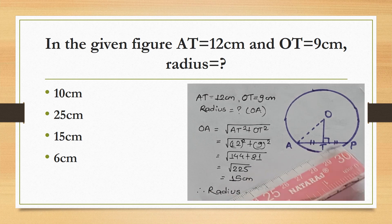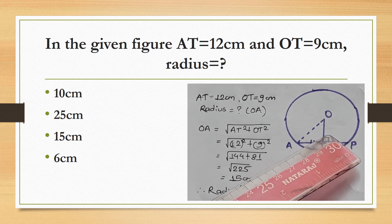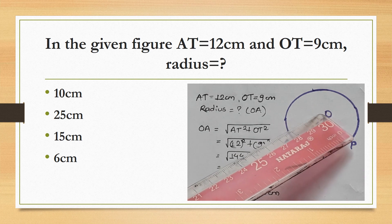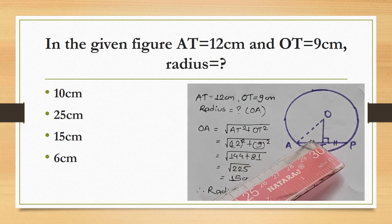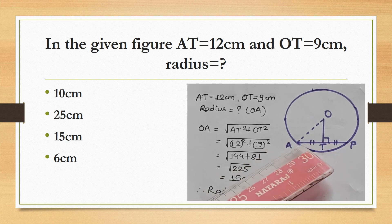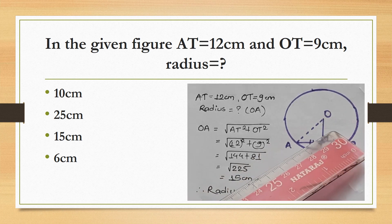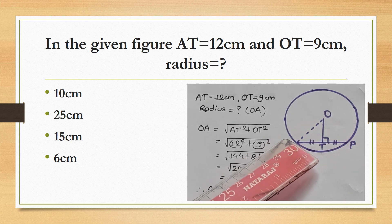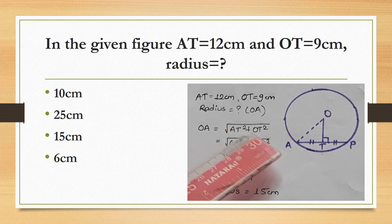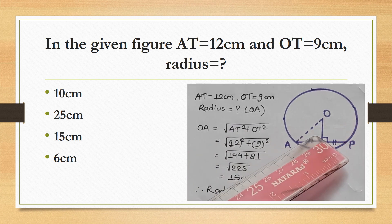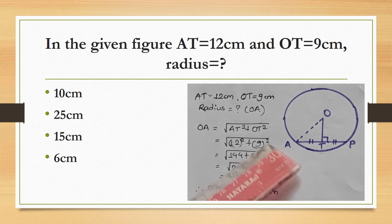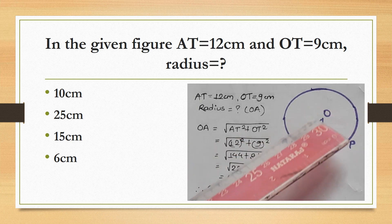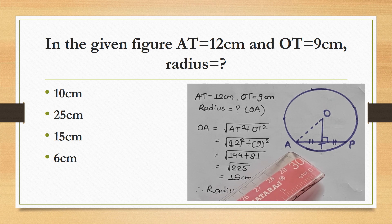A line from the center perpendicularly bisects the chord. So angle OTA = 90 degrees. We have AT = 12 cm and OT = 9 cm. Therefore OA = √(AT² + OT²) = √(12² + 9²) = √(144 + 81) = √225 = 15 cm. The radius is 15 cm.